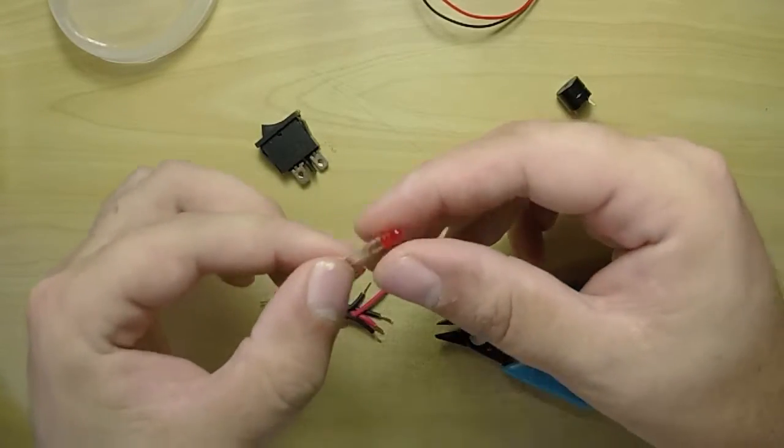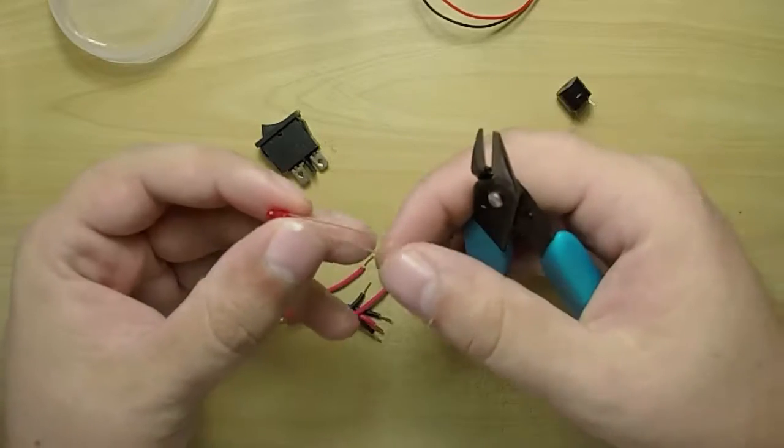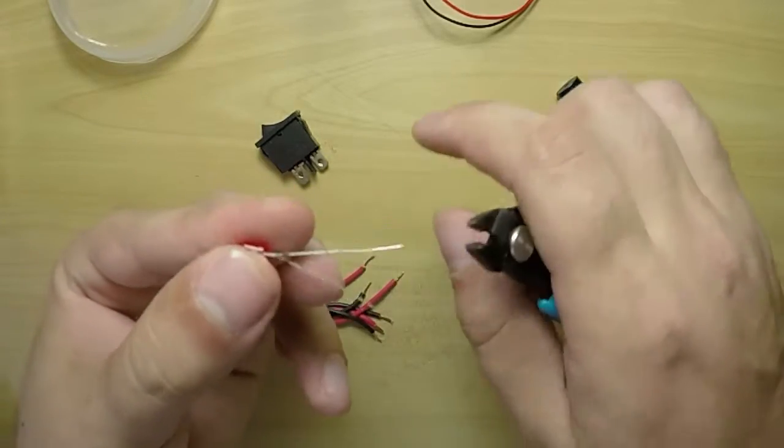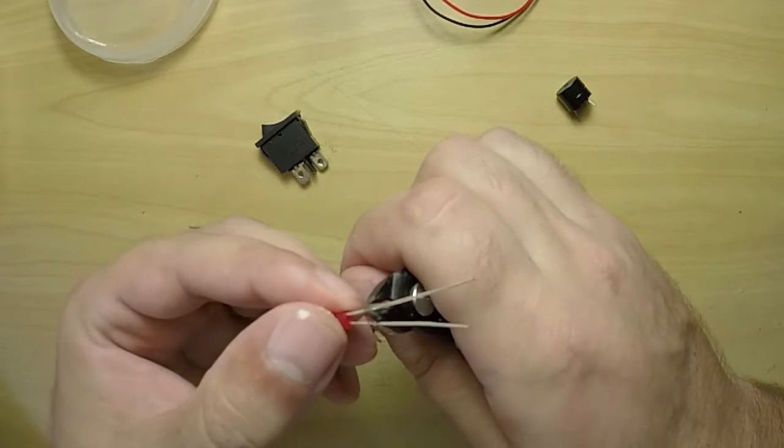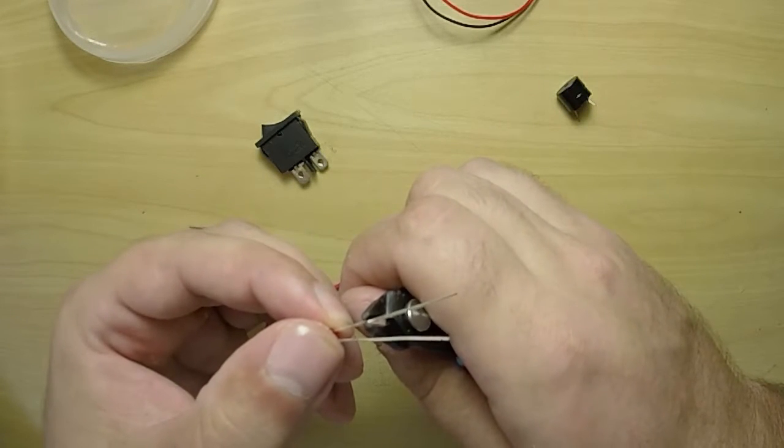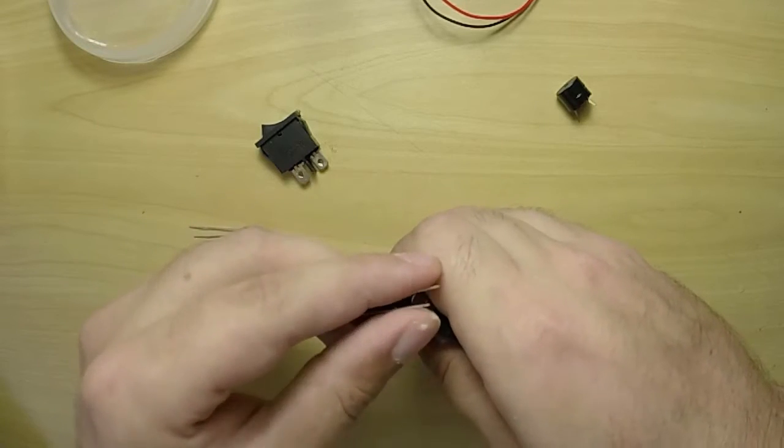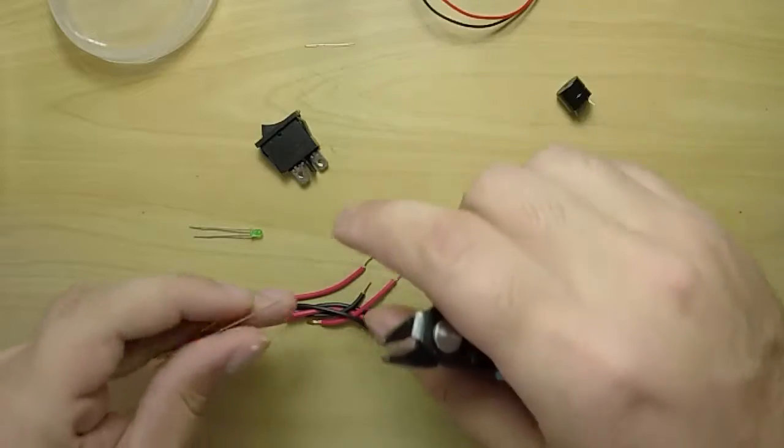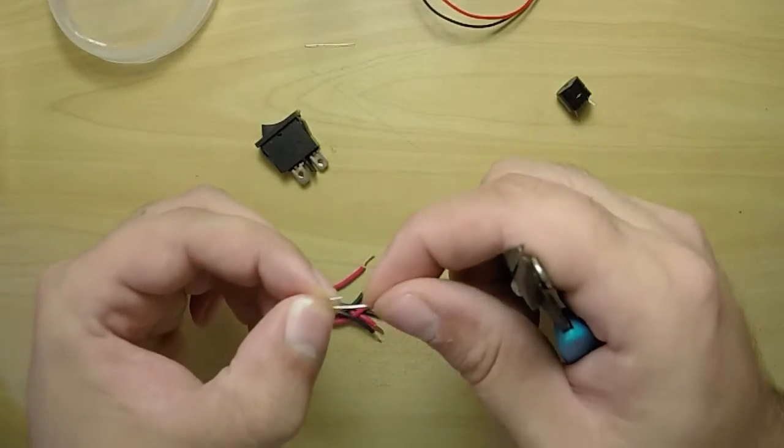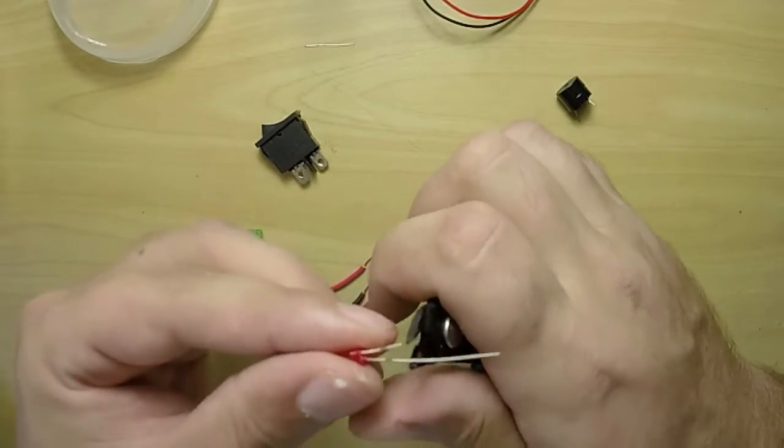What I'm going to do is cut off some of these leads, something like this, and I'm just going to have to remember that this is the positive end, the longer one. And you want to save these because it's going to come in handy later when we are soldering the components to the perfboard.